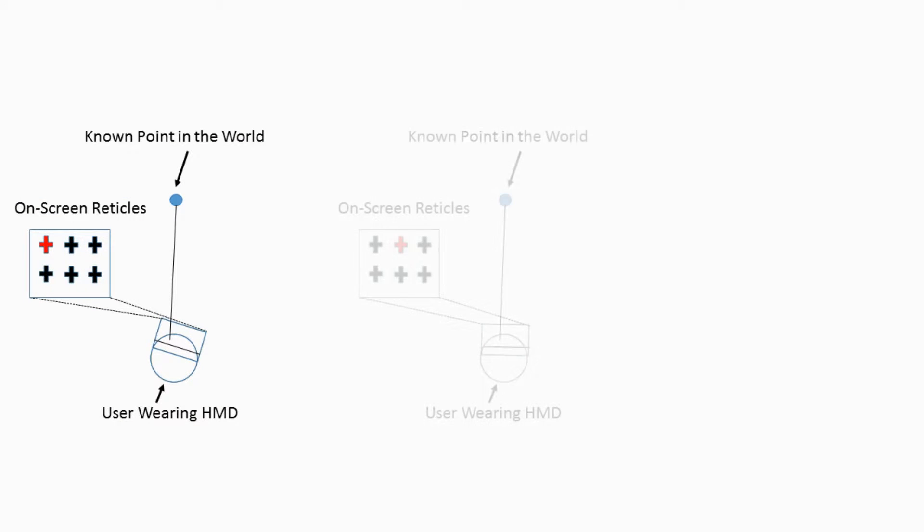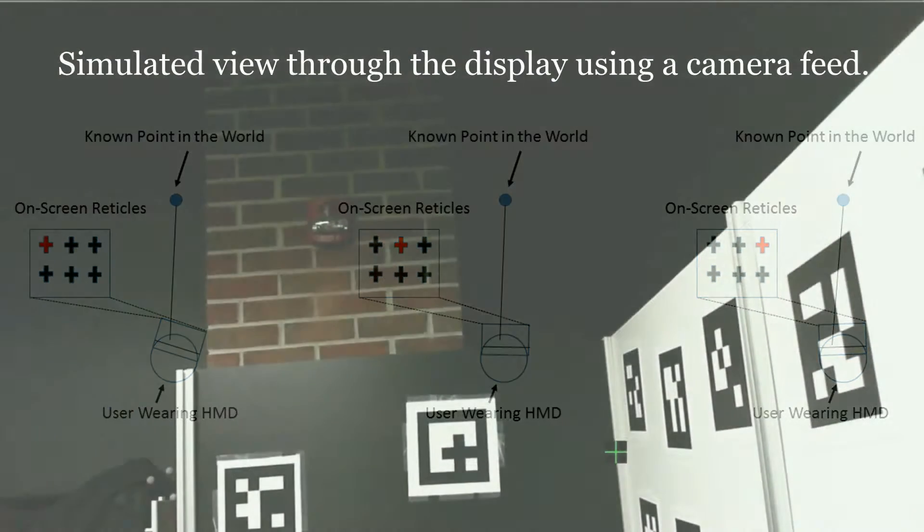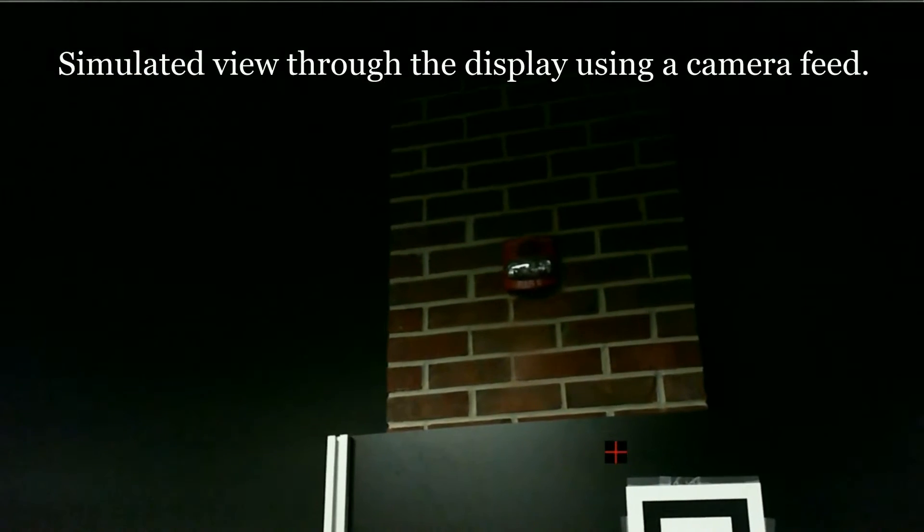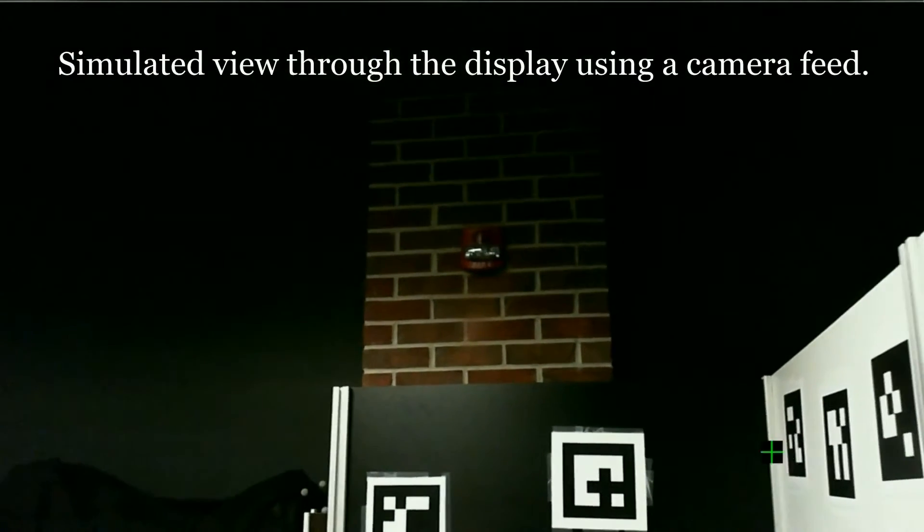To perform SPAM, the user aligns known points on the display screen with a single point in the real world, in this case, the center of a fiducial marker. As more alignments are made, the values for the projection matrix can be more accurately estimated.